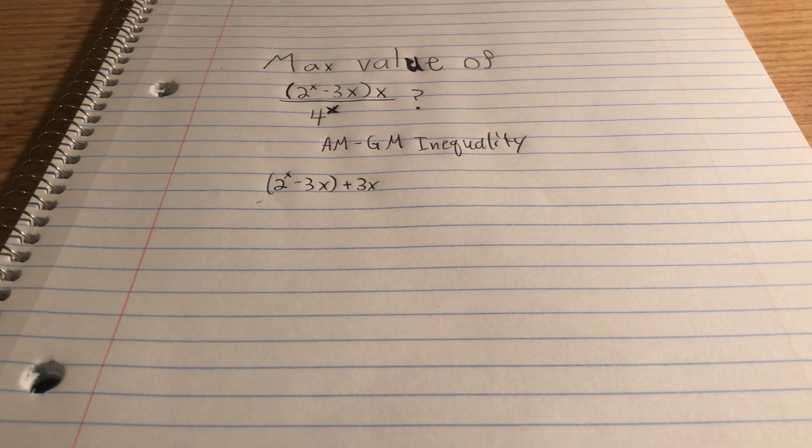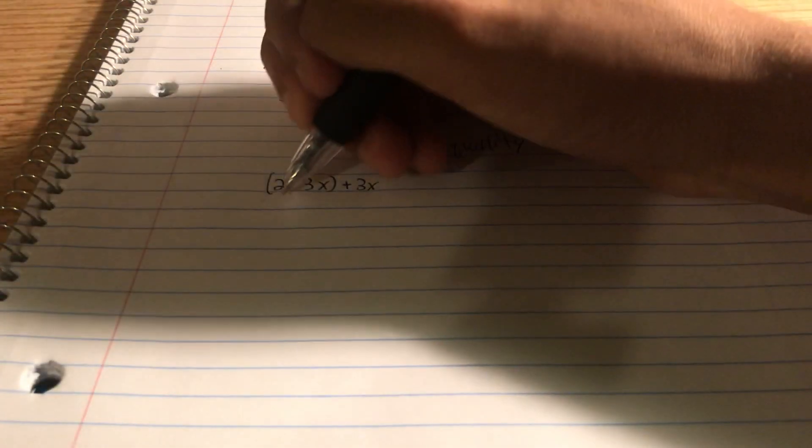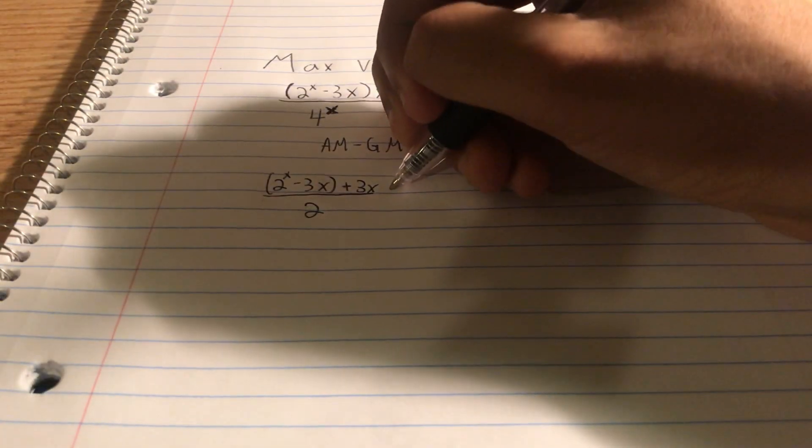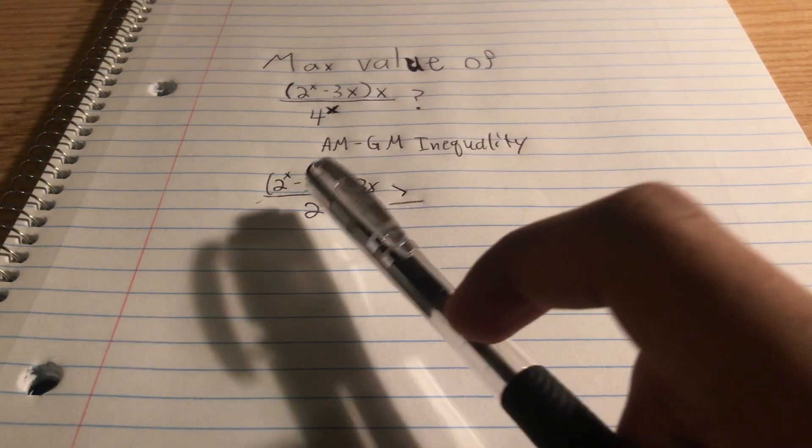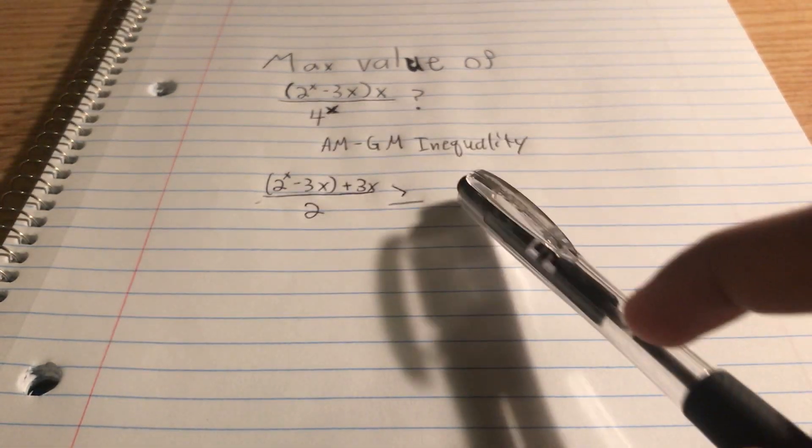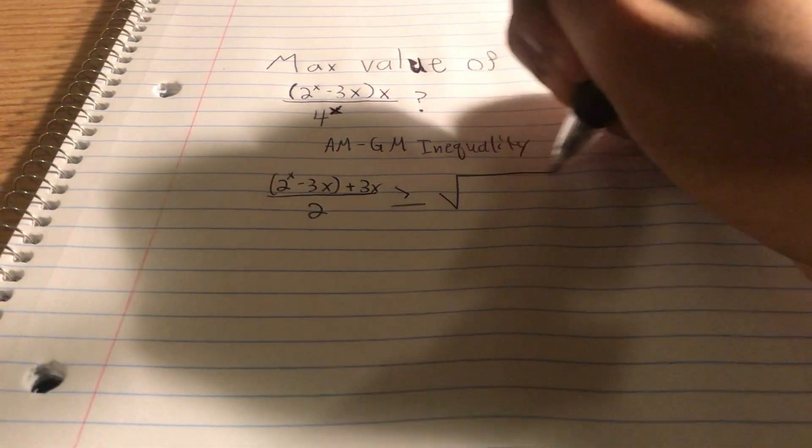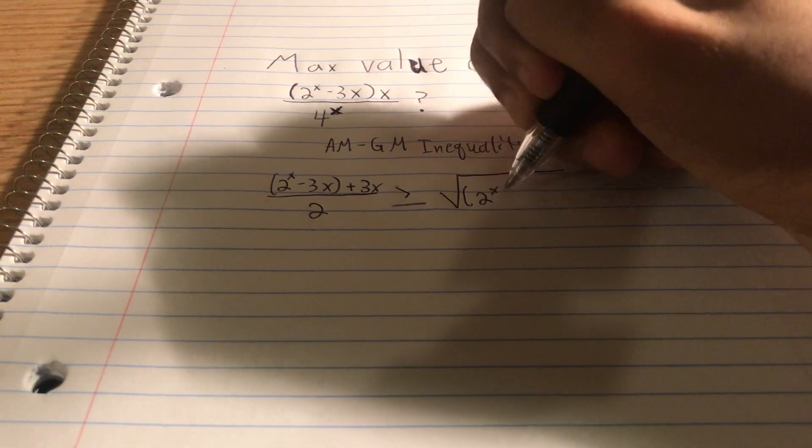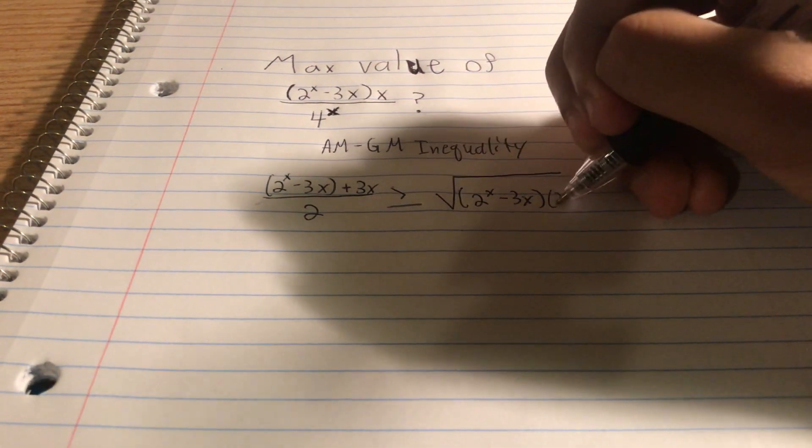So an arithmetic mean adds two terms together and then divides by the number of terms, in this case, 2. So this is our arithmetic mean right here. And the AM-GM inequality says that it's always greater than or equal to the geometric mean, which is the product of these two terms and then the square root of those two terms. So that means it is the square root of 2 to the power of x minus 3x times 3x.